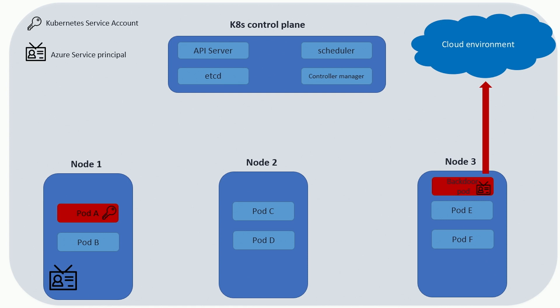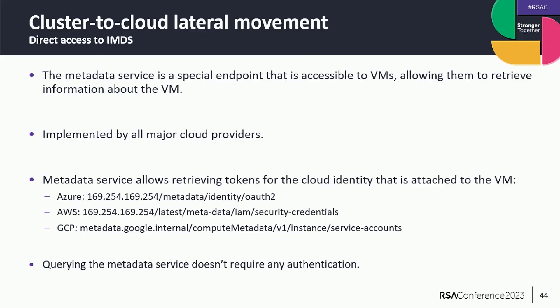This method has two limitations from an attacker's perspective. First, it's only for Azure. Second, the attacker needs access to a file from the underlying node. In the next method — direct access to IMDS — it's the default for all major cloud providers, and attackers don't need node-level access. IMDS, or Instance Metadata Service, is a special endpoint accessible to VMs in the cloud, implemented by Azure, AWS, and GCP. It allows VMs to query data about themselves and request a token for the cloud identity attached to them.